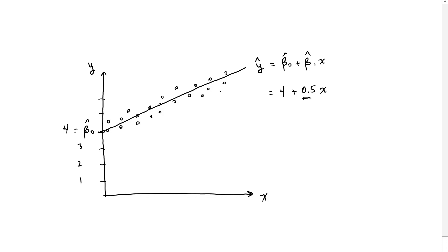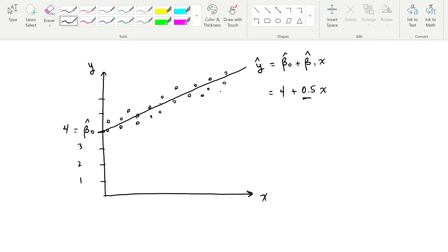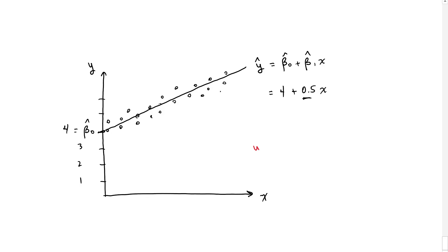But what happens if we don't include the intercept? So if we don't include the intercept, what we're saying is that it's just going to be beta 1 x. If we don't include the intercept, by definition, we're just assuming that the beta zero hat is equal to 0. And so if we don't include that intercept, we have to start the regression equation at the origin.